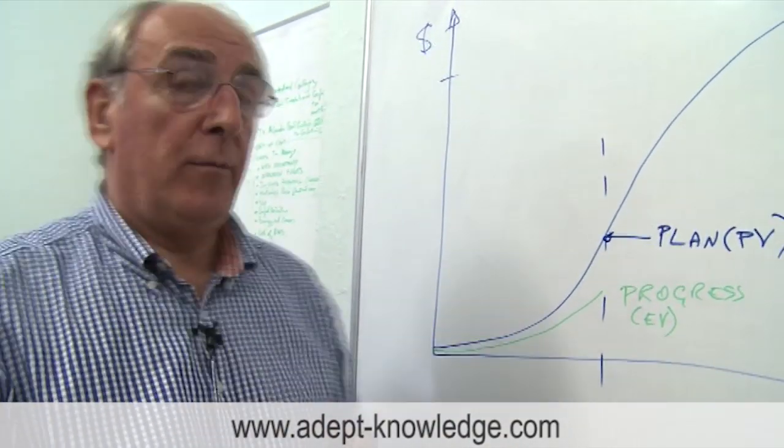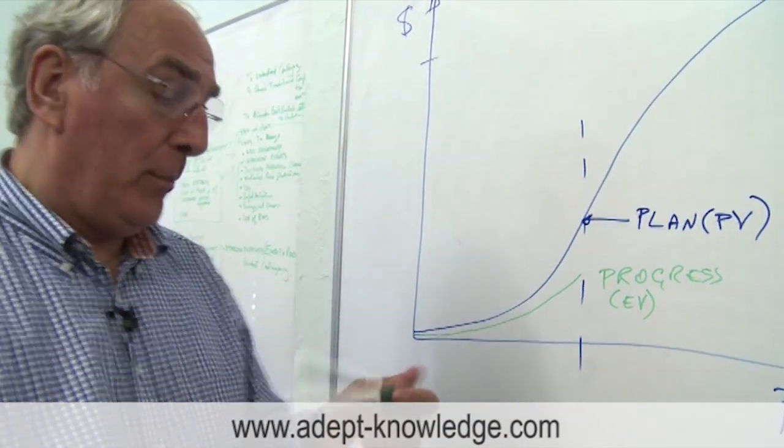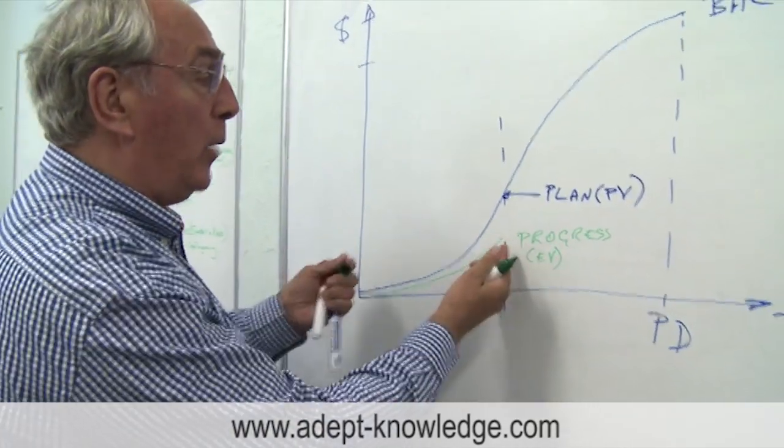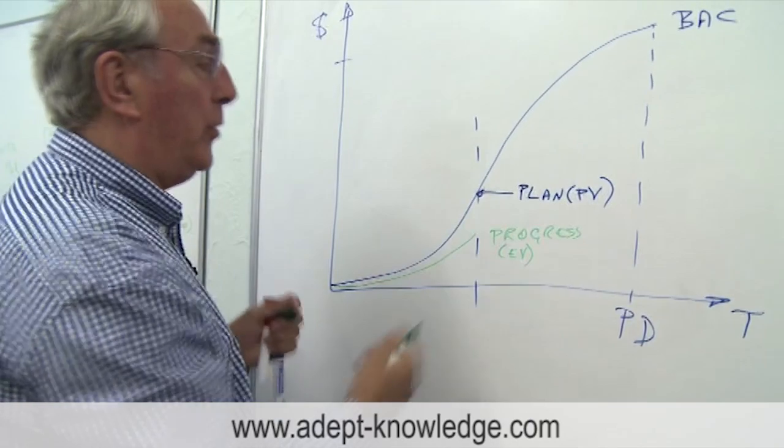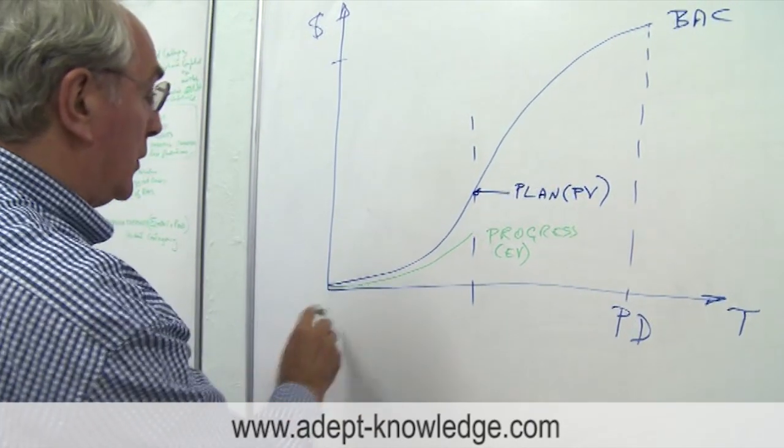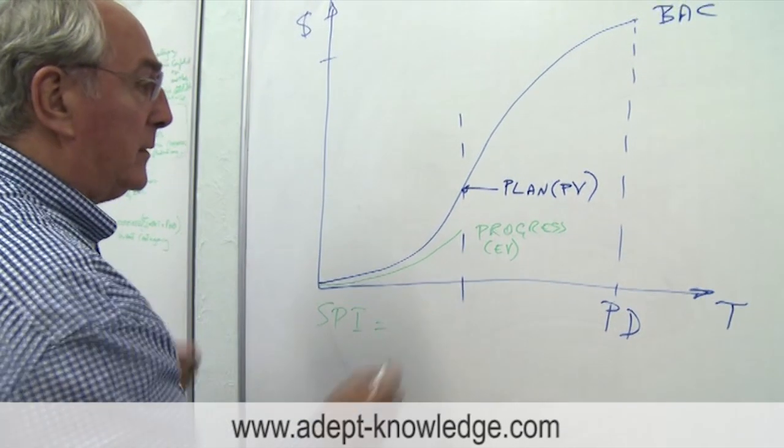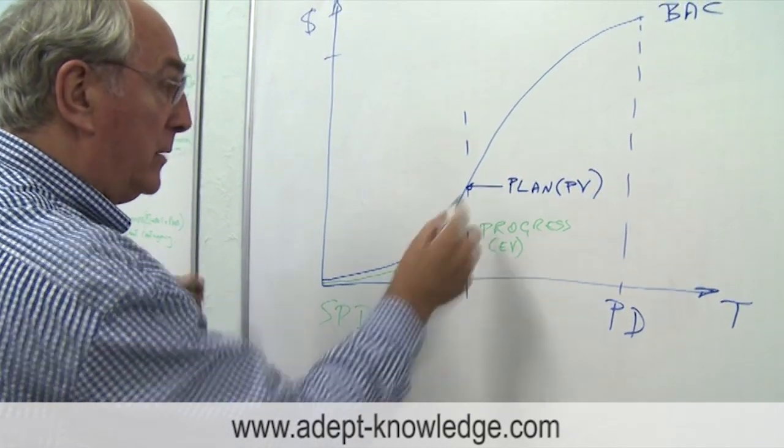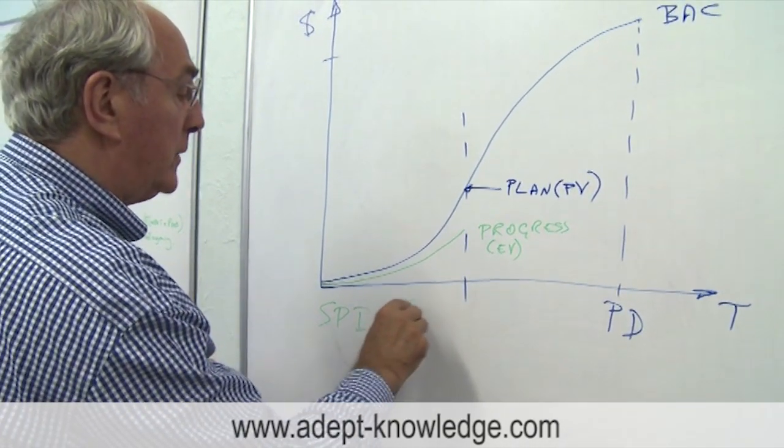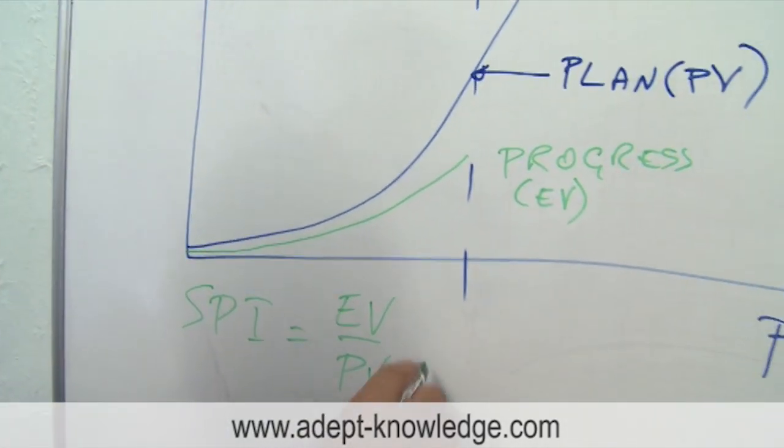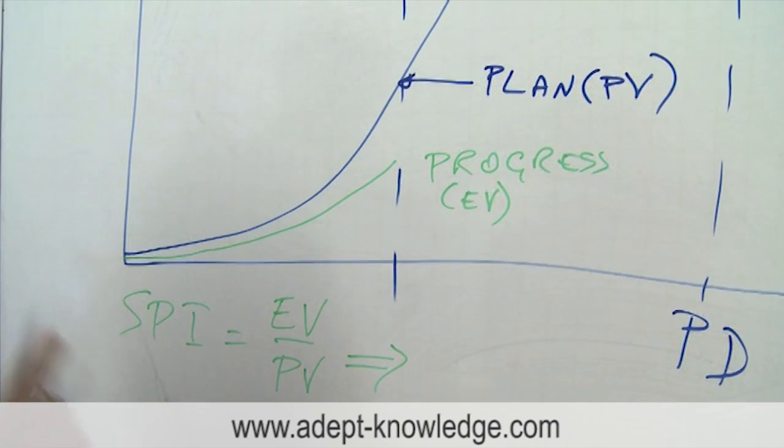And from there we can do some forecasting things. For example, by measuring an index of how well we're doing against how well we thought we were going to do, that's called a schedule performance index. And that simply is a measure of the progress divided by the plan, or we could say EV divided by PV.